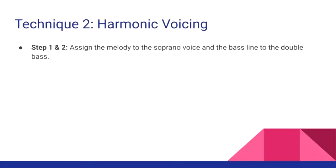Our first two steps are nearly identical to the four-part writing strategy. We'll assign the melody to our first violins, and assign the bass line to our double bass — but this time we'll leave out the cello. Our bass line is still super important in this strategy, maybe even a little more so than the last one, as it allows us to get a little creative while keeping us anchored to the harmonic bed, or to the chord progression.